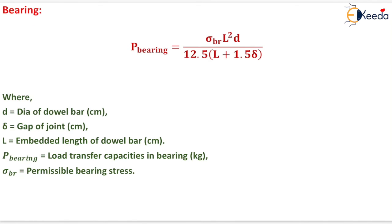In bearing, P_bearing = (σ_br × L² × d) / [12.5(L + 1.5δ)], where d is the diameter of the dowel bar in centimeters, δ is the gap of the joint in centimeters, and L is the embedded length of the dowel bar in centimeters.